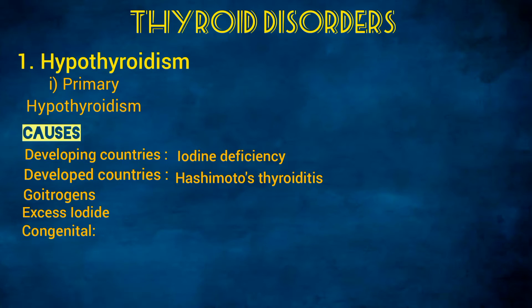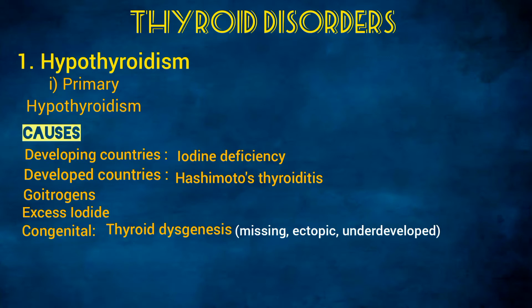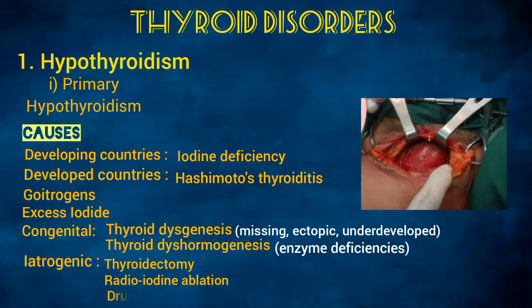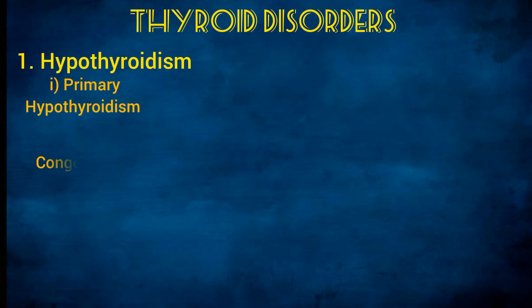Hypothyroidism can also be congenital, as in thyroid dysgenesis where the thyroid is missing, ectopic, or severely underdeveloped, or in thyroid dyshormogenesis where the thyroid is present but not functioning correctly due to genetic deficiencies in enzymes involved in hormone synthesis. Iatrogenic causes include thyroidectomy, radioiodine ablation of the thyroid gland, and certain drugs such as amiodarone and lithium.